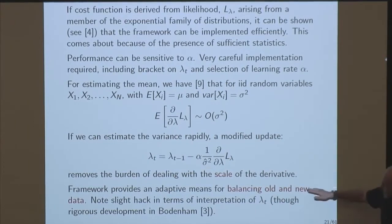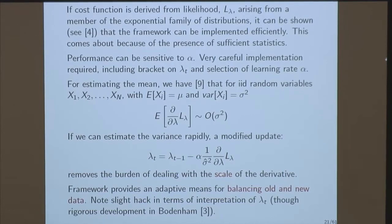We don't know what the scale of the derivative is, so it's hard to think about alpha, the learning rate. But we know typically the magnitude of it, so if we modify and divide out the typical magnitude of that derivative, at least we can think about the same scale. Ultimately all of this is an attempt to balance old and new data. If this change isn't very big, the detector may miss it, but if I'm doing adaptive estimation like this, the estimator will still move to the new regime — I still have an up-to-date estimate.